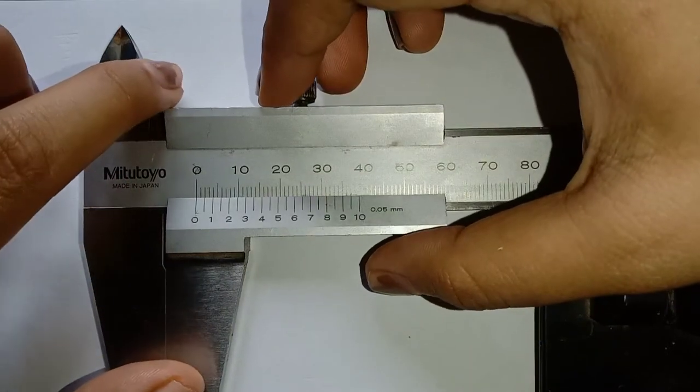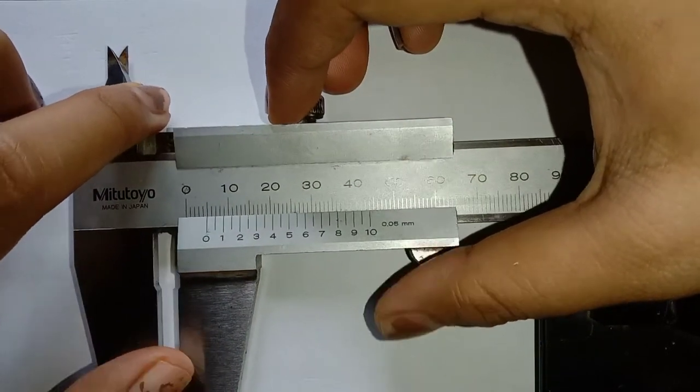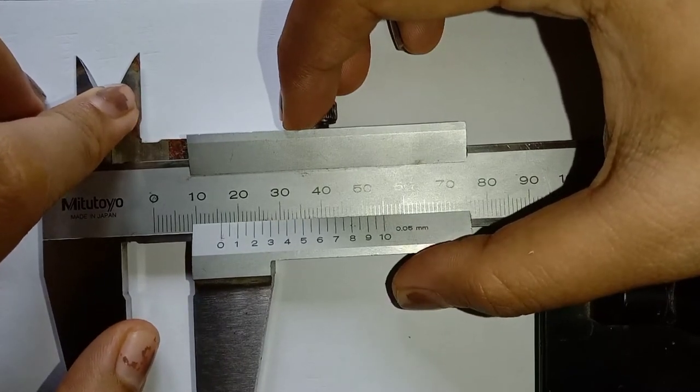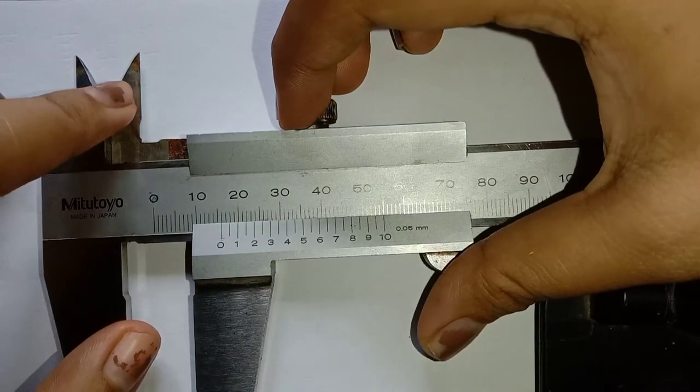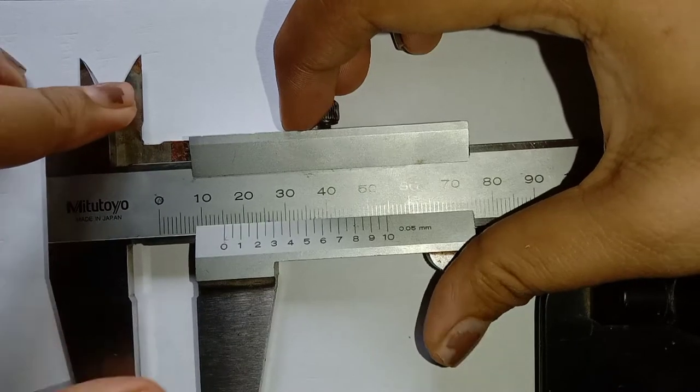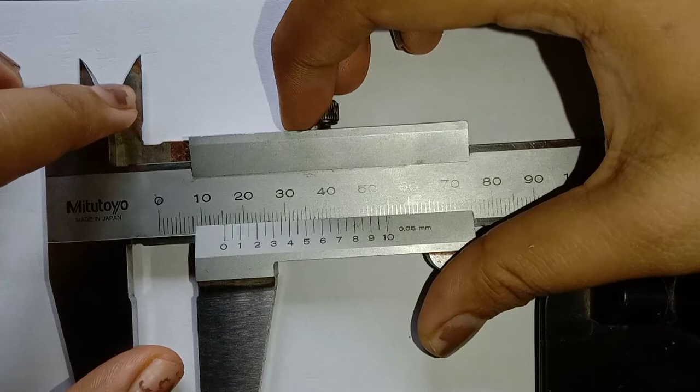And if I open the caliper, I can read 5 mm, 9 mm, 15 mm, and 16 mm. But what if the zero in the vernier scale is between the 15 and the 16 mm in the main scale?